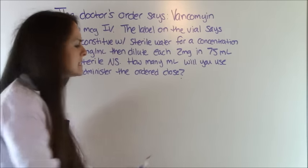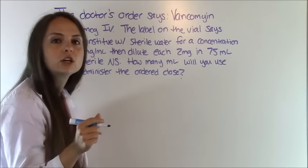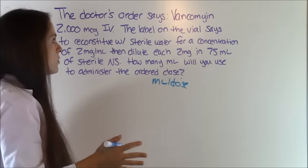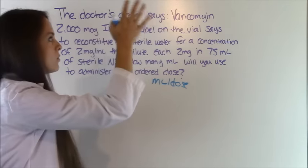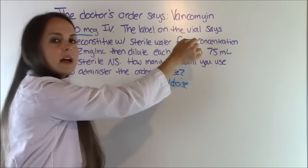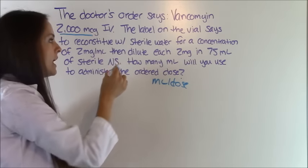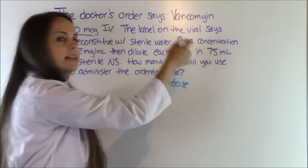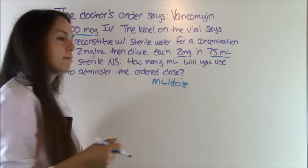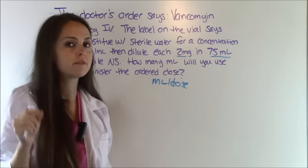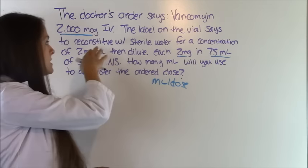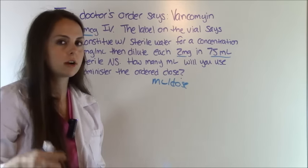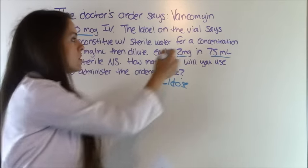First, ask yourself what is this question asking us for? This question is asking us for milliliters per dose. Vancomycin 2,000 micrograms IV — that's what the doctor ordered, so underline that. The concentration of 2 milligrams per milliliter is irrelevant; we don't need that. What we need to know is after we dilute it with saline, the concentration will be 2 milligrams per 75 milliliters. For every 75 milliliters there's 2 milligrams of vancomycin — that's what we're working with. Those are the important things.